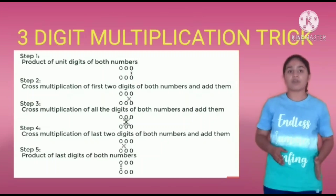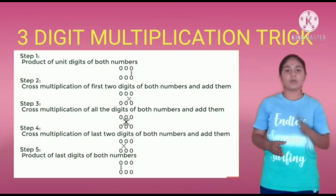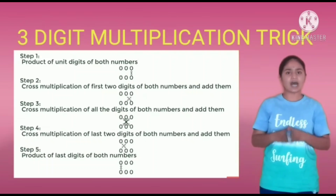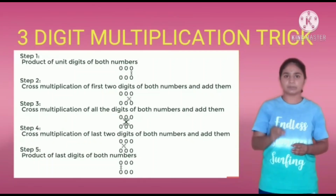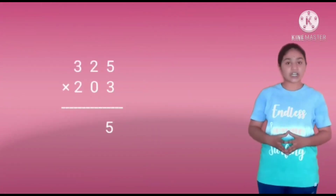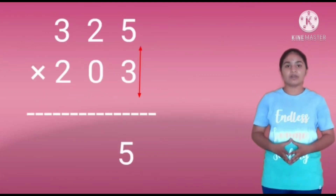Step 4: Cross multiplication of the last digits and add them. Step 5: Product of the last digits. There are 5 steps in total for the 3-digit multiplication trick. Now let us do the examples. Here, 325 is multiplied by 203.